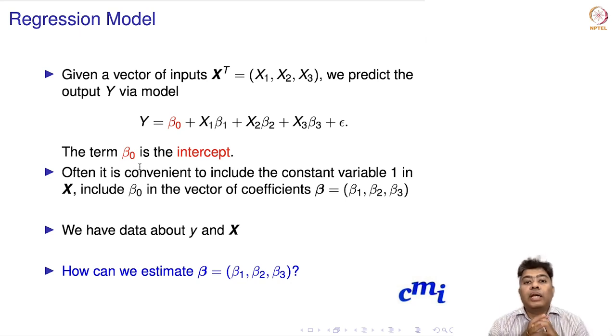Often it's convenient to include a constant variable in the x matrices, which includes beta naught in the vector of coefficients beta (which is only beta 1, beta 2, beta 3). We have data about Y and X and a model, but we don't know the values of these coefficients, so we want to estimate these parameters beta 1, beta 2, beta 3.